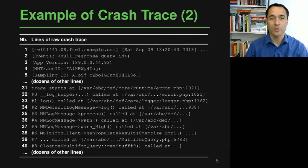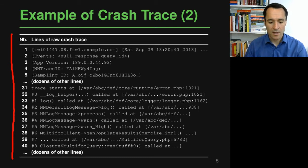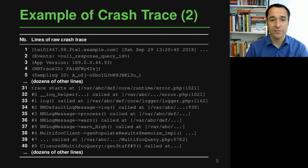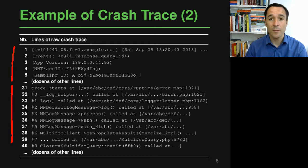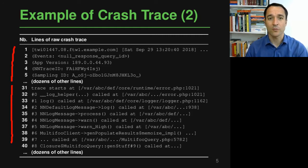Here's another example of a crash trace, this time from a server-side piece of code that is written in PHP. Again, there are different kinds of information — a stack trace and some information about the application that has crashed. But you can also see that the format differs a lot from the previous crash trace. All of these crash traces come in various different formats, depending on the language, the platform and many other factors, and these formats are also evolving over time.